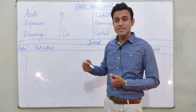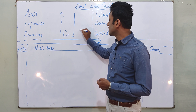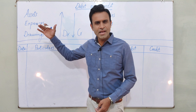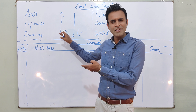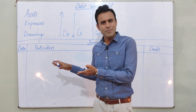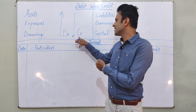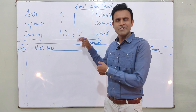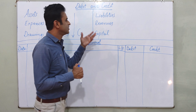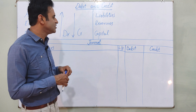And if any of these three things decreases, then we will credit them. You need to remember which column to write in — debit or credit — based on the amount in the transaction. The other separate group of three are liabilities, revenues, and capital.